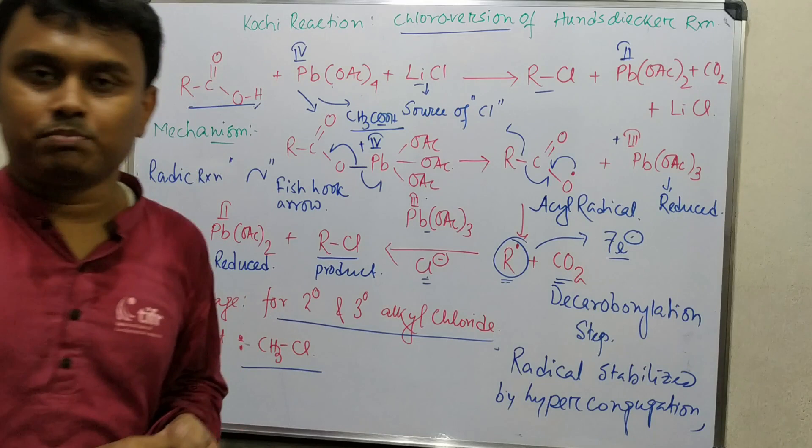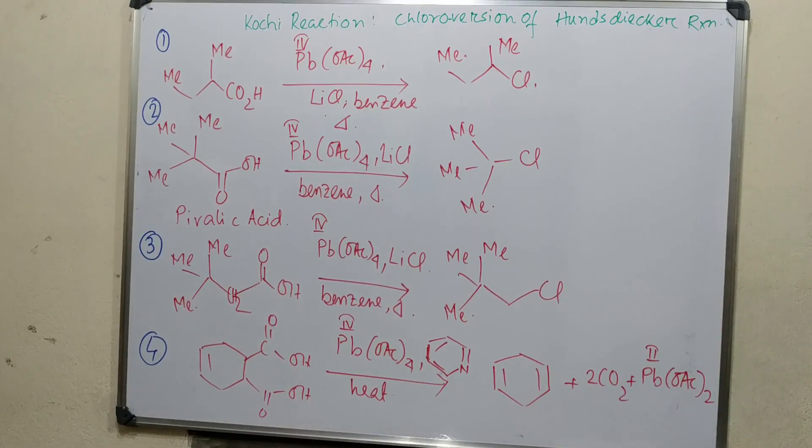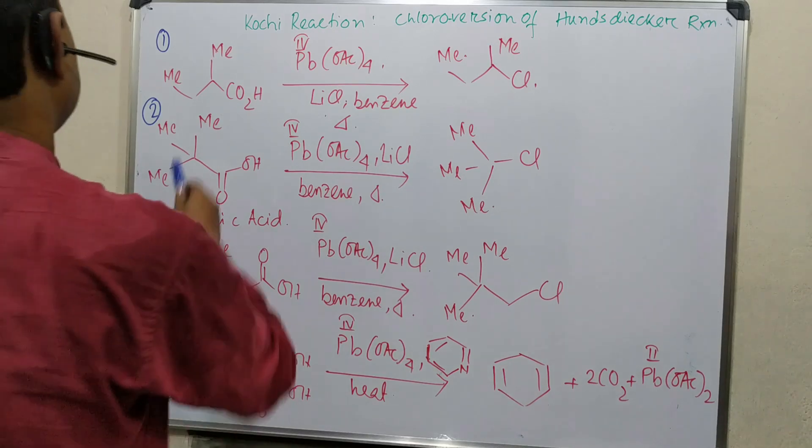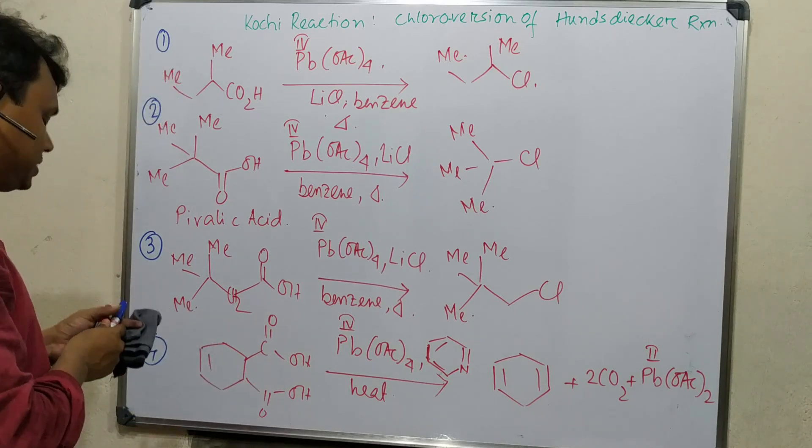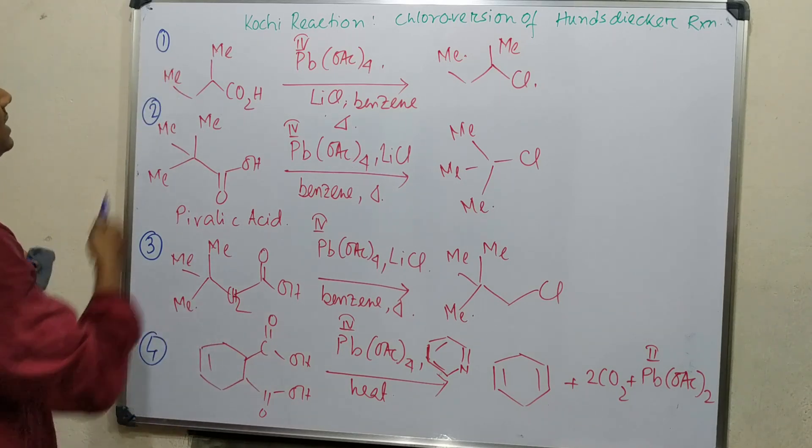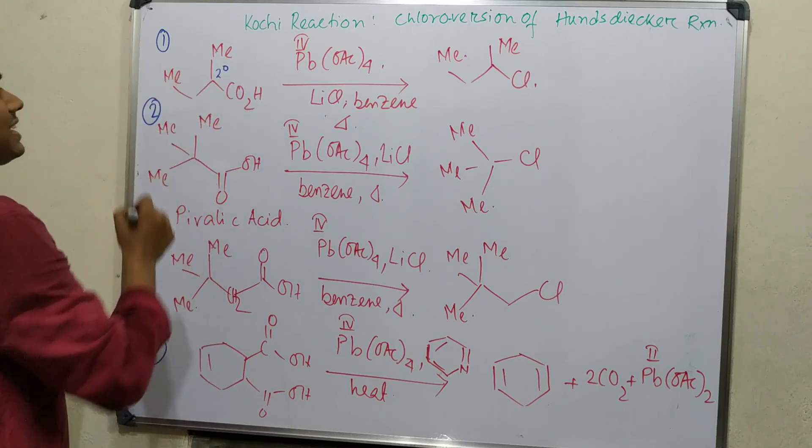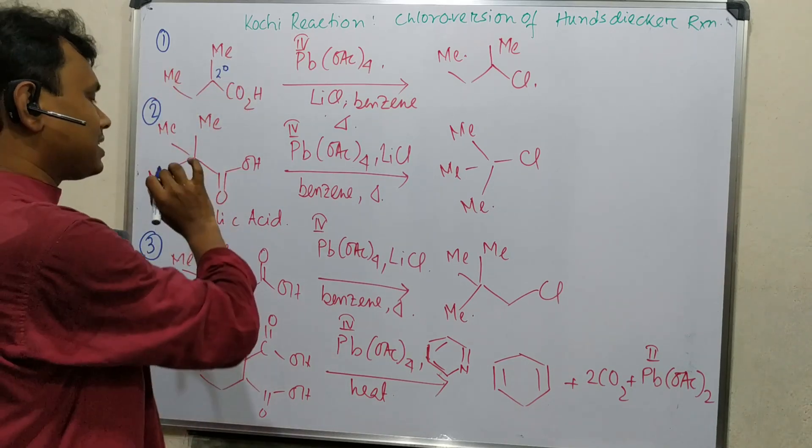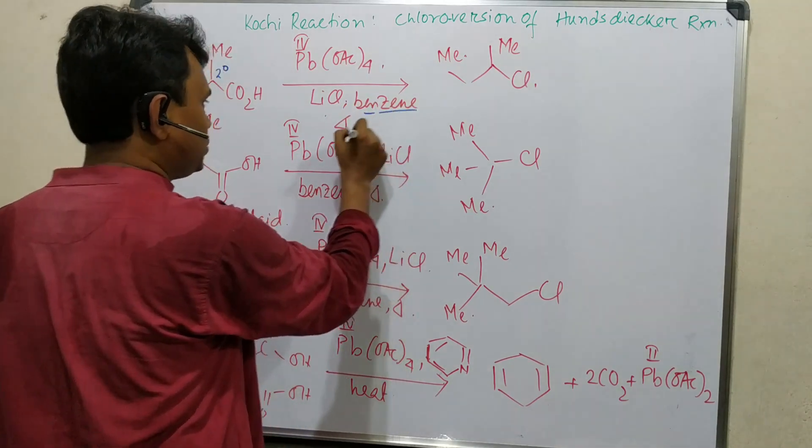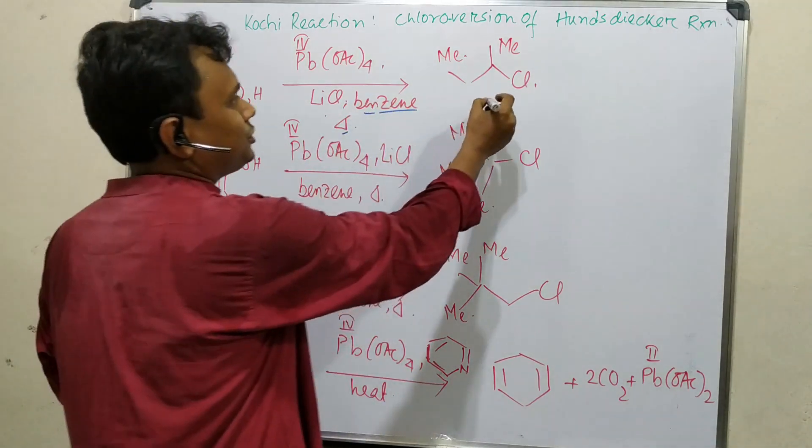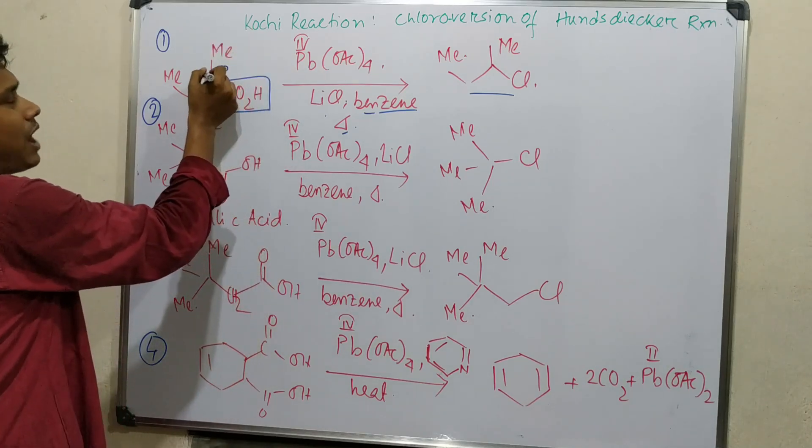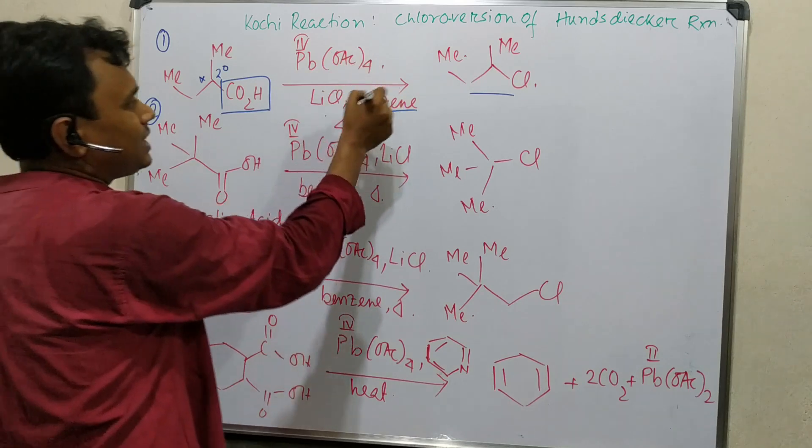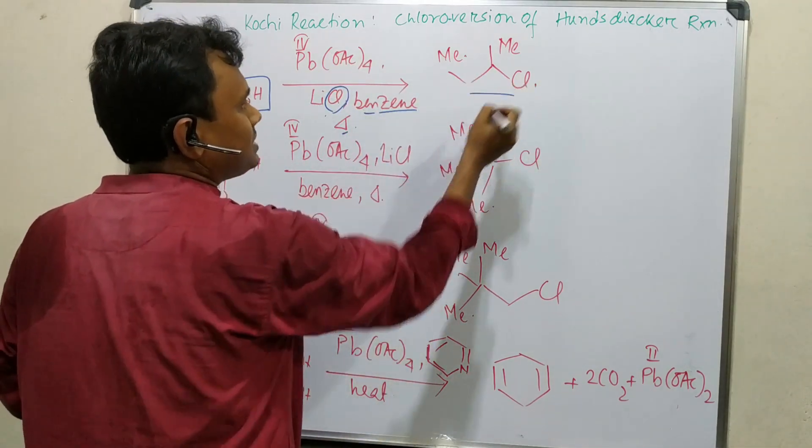This methyl chloride is coming from the acetate ion generated from lead tetraacetate. This is the understanding about the basic concept of mechanism. Let's discuss some examples. In the first example, if this carboxylic acid with a secondary carbon is taken, it reacts under similar conditions.